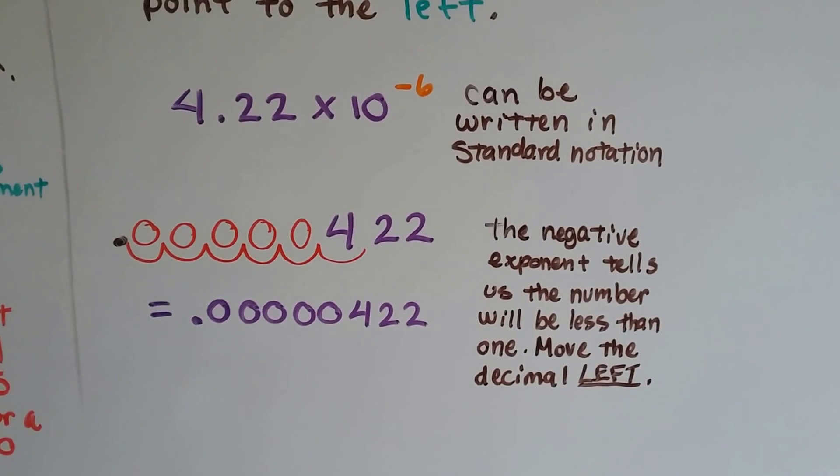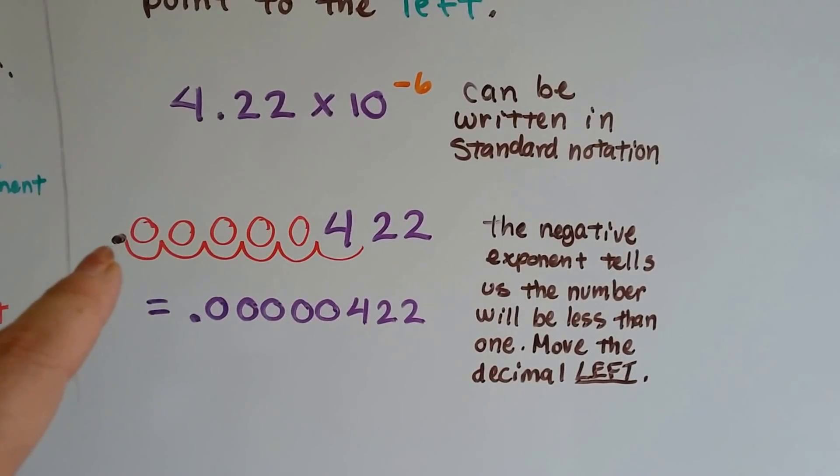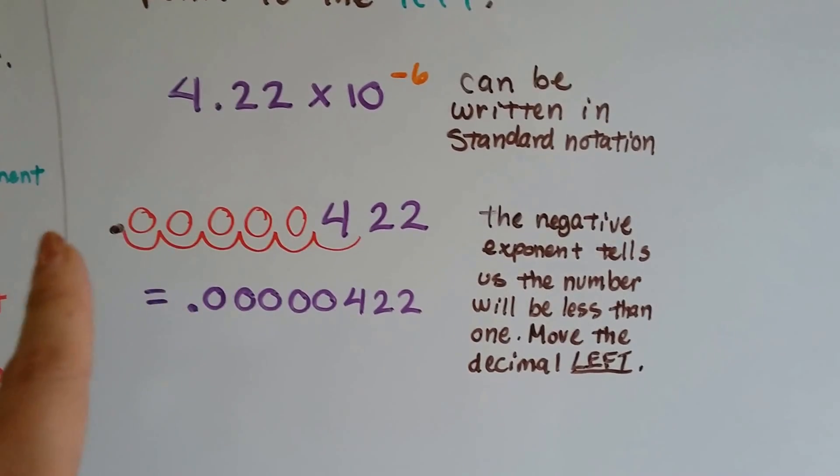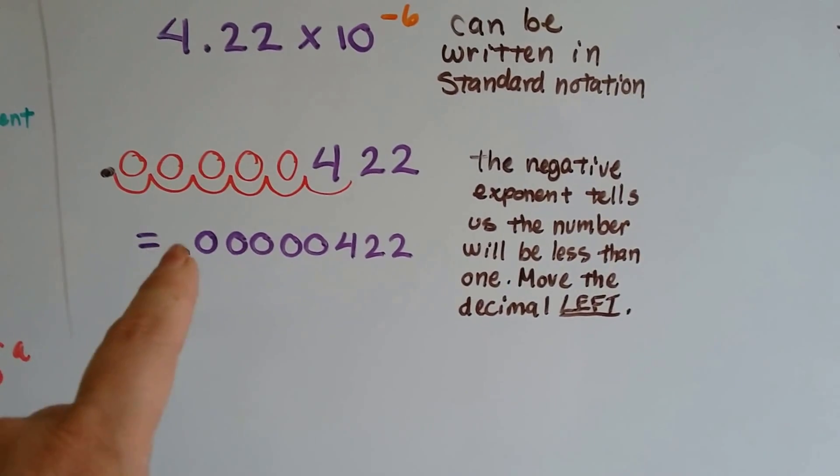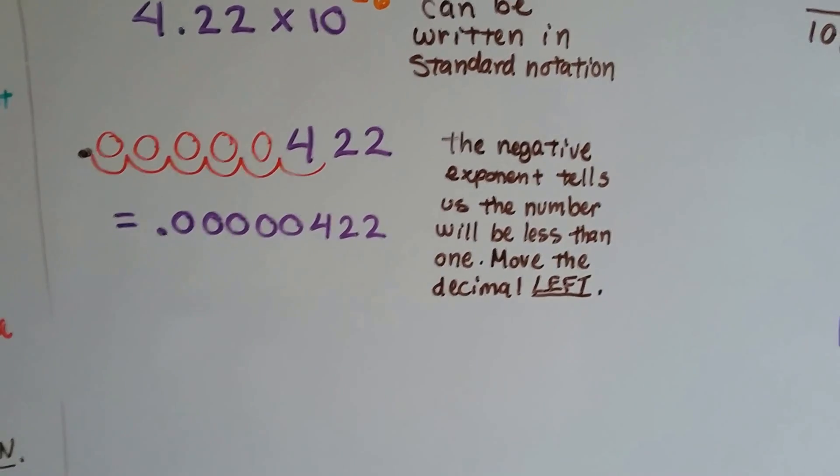The negative exponent tells us the number will be less than 1, so we know it's going to be a decimal. So we move the decimal left. Now we know our answer is .0000422.